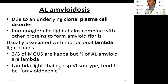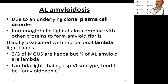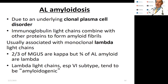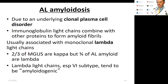AL amyloid patients by definition have an underlying clonal plasma cell disorder, with immunoglobulin light chains — either kappa or lambda — combining with other proteins to form amyloid fibrils. Unlike MGUS, patients with AL amyloid tend to be lambda light chain as opposed to kappa. About two-thirds of MGUS patients are kappa-related, whereas with AL amyloid it flips — three-fourths are lambda. The mnemonic is 'lambda loves amyloid.' Lambda light chains, especially subtype 6, tend to be amyloidogenic.